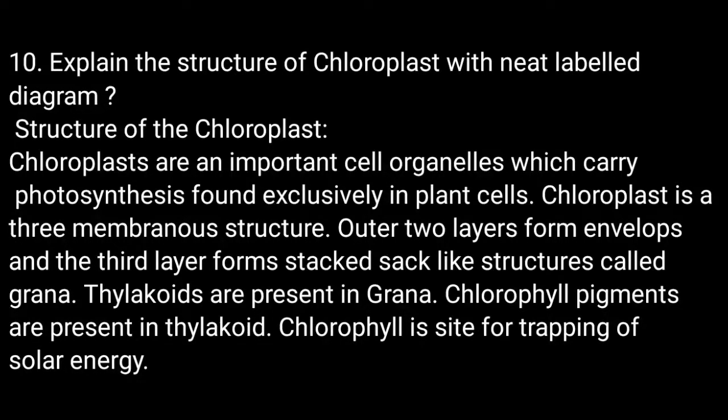Explain the structure of chloroplast with a neat labelled diagram. Structure of the chloroplast: Chloroplasts are important cell organelles which carry out photosynthesis, found exclusively in plant cells. Chloroplast is a 3-membraneous structure. The outer two layers form envelopes and the third layer forms stacked sac-like structures called grana. Thylakoids are present in grana. Chlorophyll pigments are present in thylakoids. Chlorophyll is the site for trapping of solar energy.